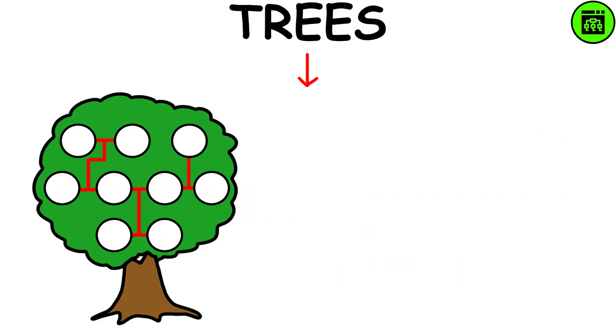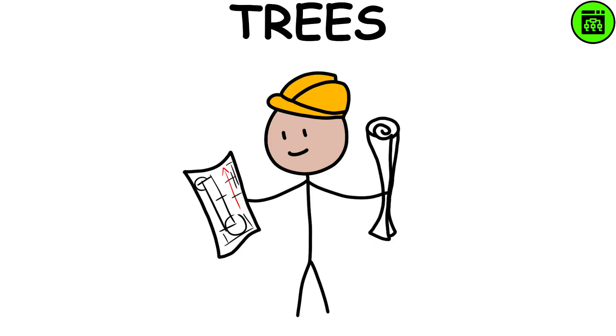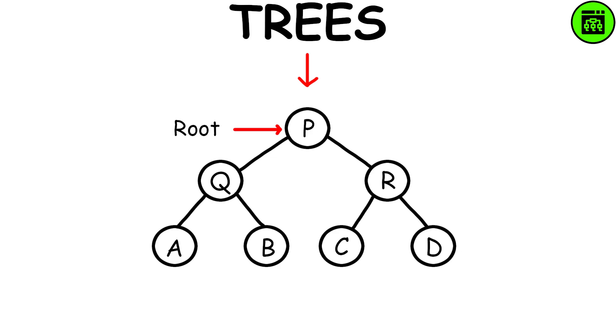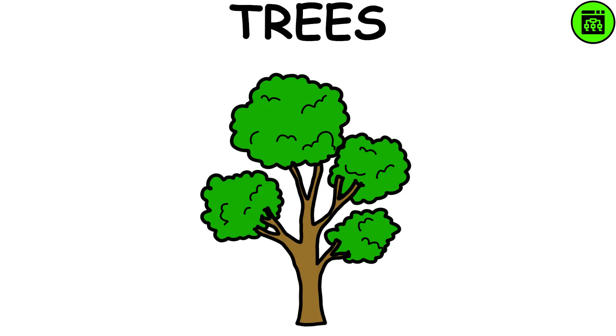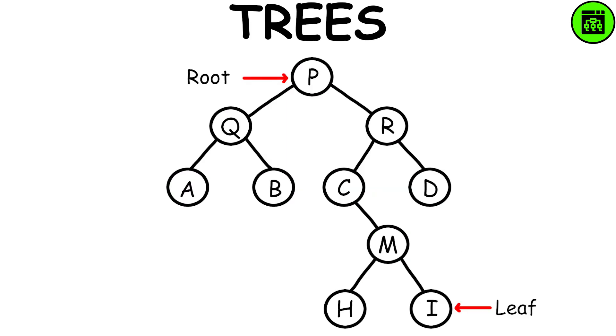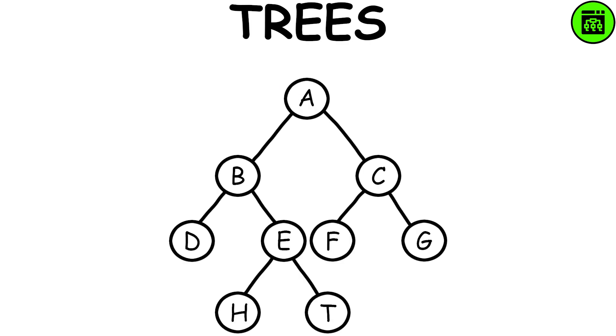Trees are like family trees or organizational charts. They show how things are connected in a structured way. Every tree starts with a root and branches out into smaller parts, kind of like a tree's trunk and branches. Each branch leads to more branches until you reach the end, which is called a leaf. Binary trees are a special type where each part only has two branches.